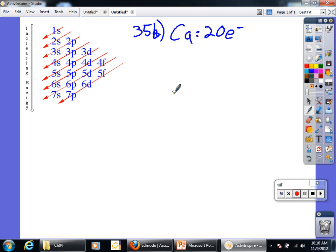So 20, 1, 2, 1, 2, 3, 4, 5, 6, 7, 8, 9, 10, 11, 12, 13, 14, 15, 16, 17, 18, 19, 20. So I've got to keep going all the way to 4S. Wait, what? Again, calcium is 20 electrons. So I'm just going to follow this chart until I can count to 20.